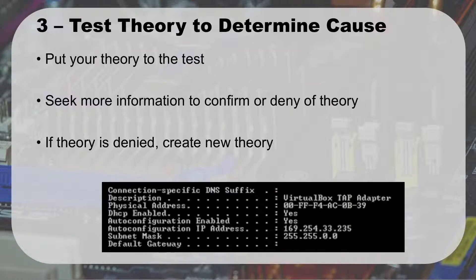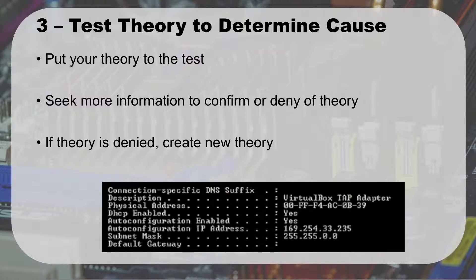Step three: test your theory to determine the cause. You need to start looking for information to confirm or deny your theory. If your theory is that the network cable isn't plugged in and you check and it is plugged in, you need a different theory. For example, if someone can't get to Facebook and I look at their IP address and see a 169.254.x.x address — that's an Automatic Private IP Address, APIPA. Those addresses can't get on the internet; that's what happens when DHCP fails. Once we know that, we'll go ahead and try solving that problem.